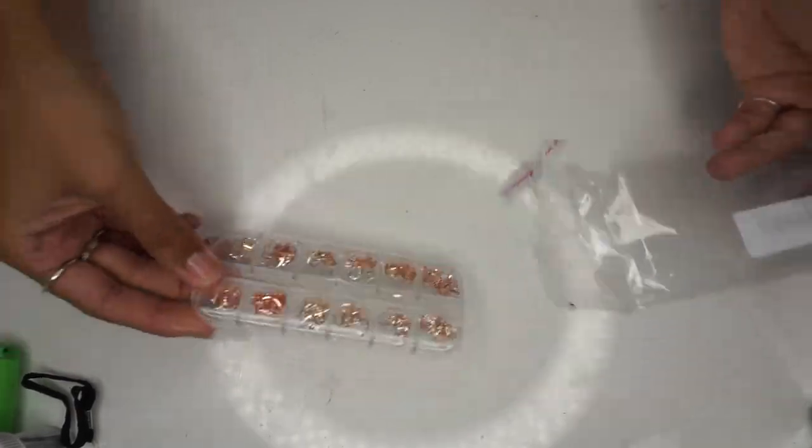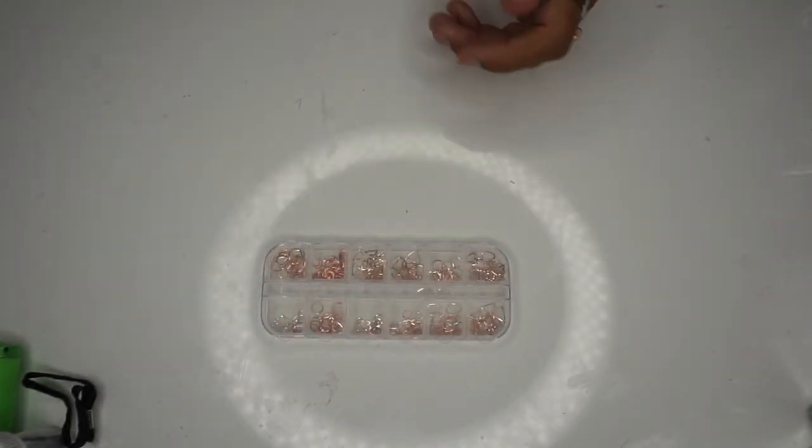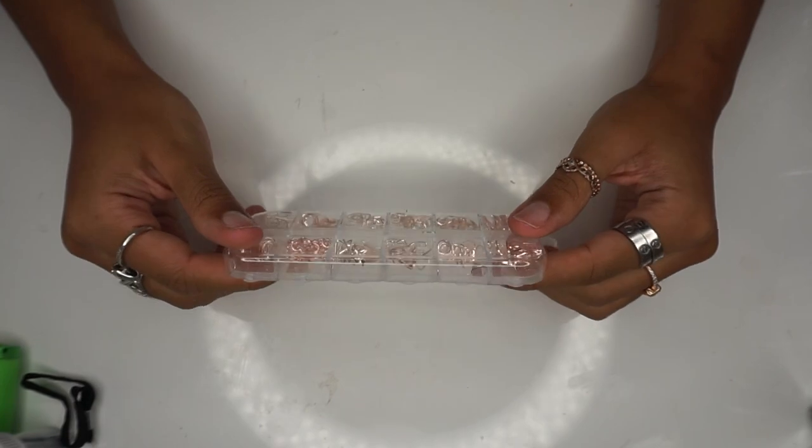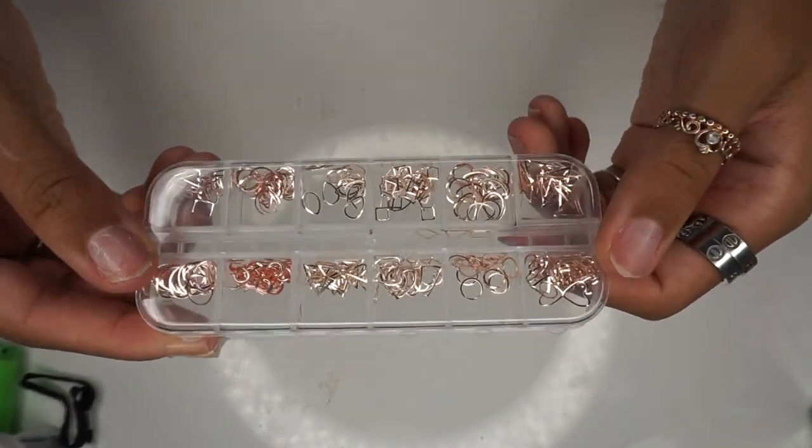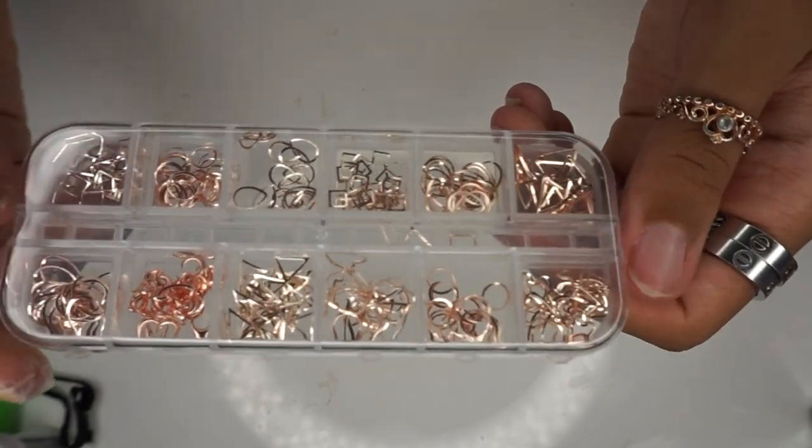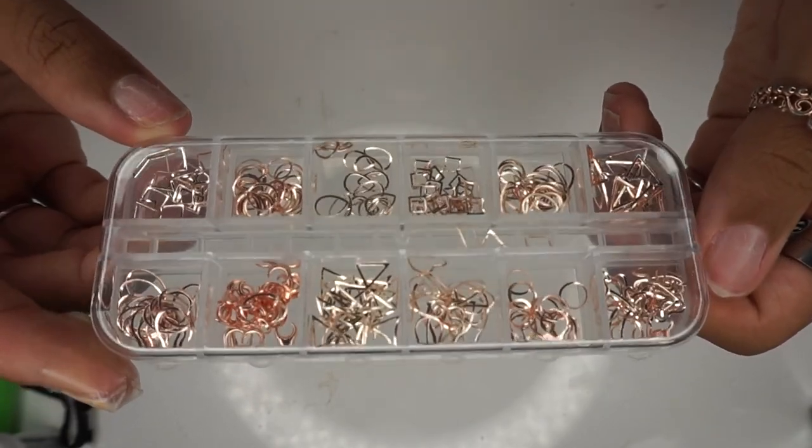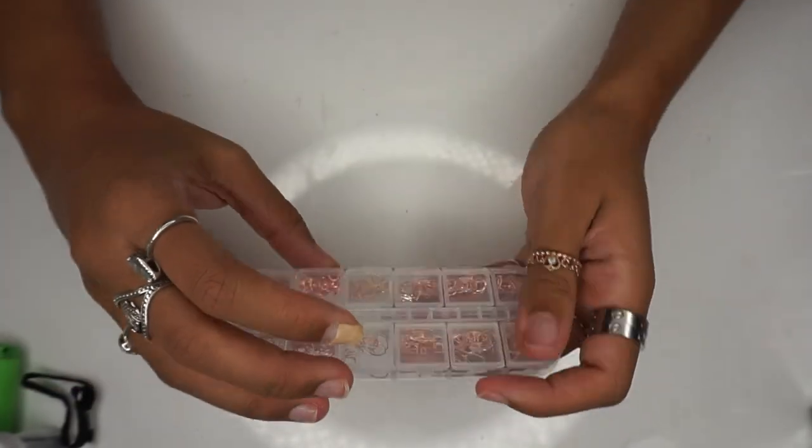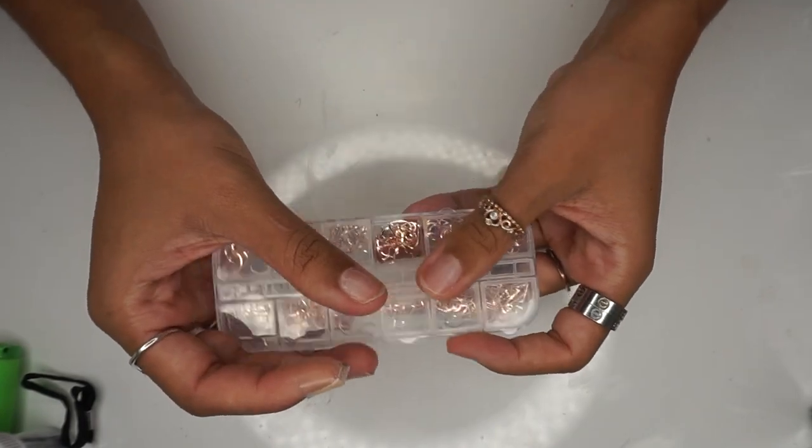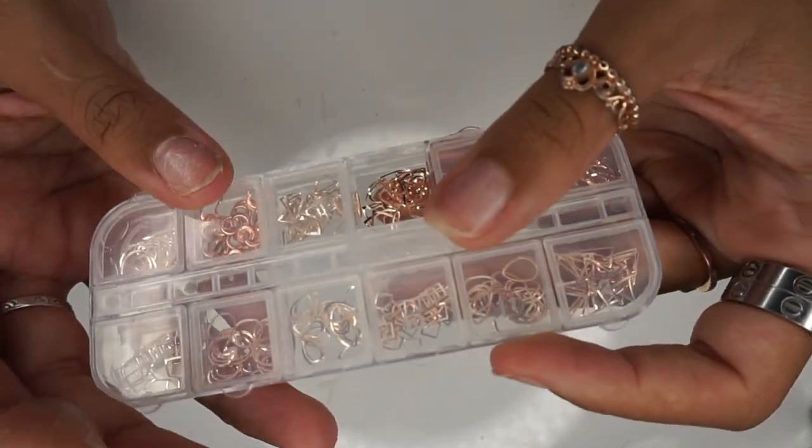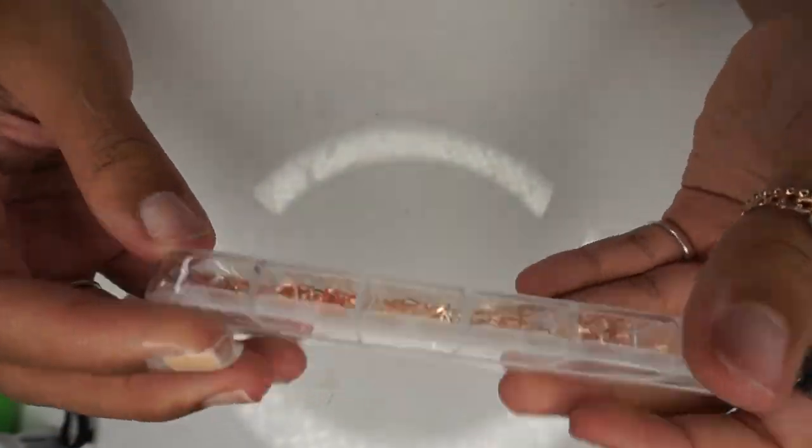Next is the one box geometric metal nail art decorations. This is two dollars and it's a really good buy. I love this as well. I actually just used this in my previous nail tutorial. When you're doing nail art with these, you want to make sure that you bend it so it fits your nail bed.